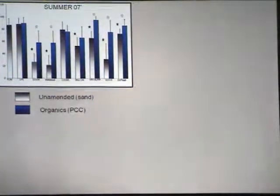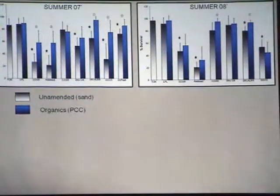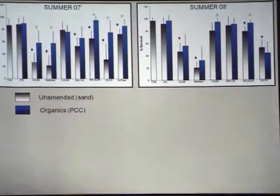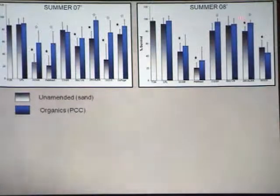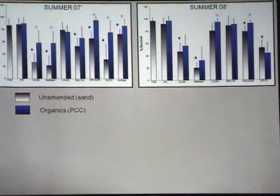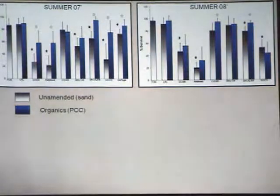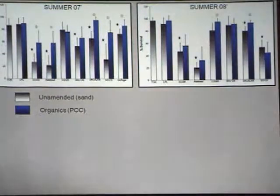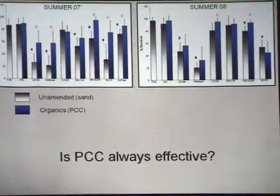We also looked at different seasons. Comparing summer 2007 to summer 2008, the trend is fairly similar — toxicity at the same sites. But the thing that jumps out is that the powdered coconut charcoal was not being as effective at reducing toxicity at these sites in 2008. We contacted Teresa Norbert King and Dr. Dave Maths at EPA in Duluth, Minnesota, who developed these sediment criteria. They said they see this problem all the time — though it would have been nice to know that earlier.